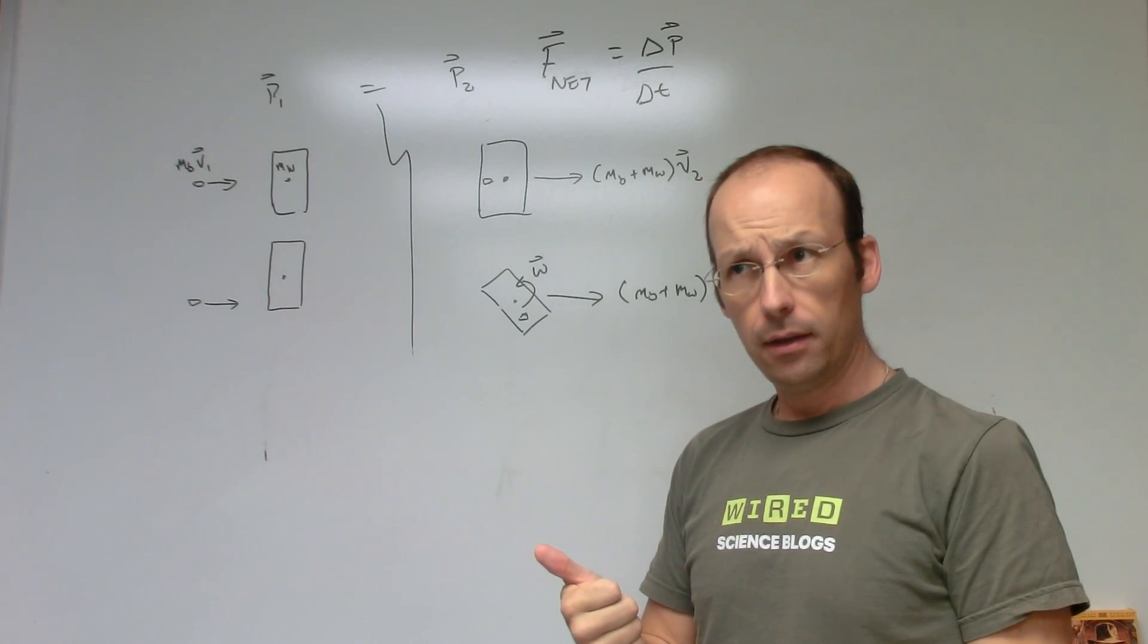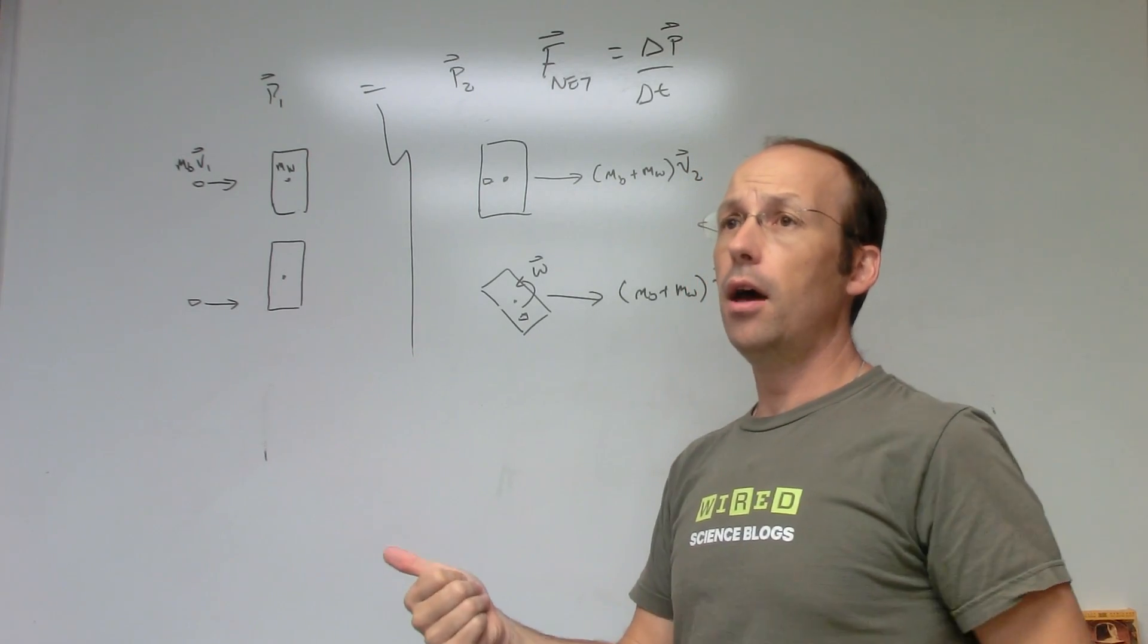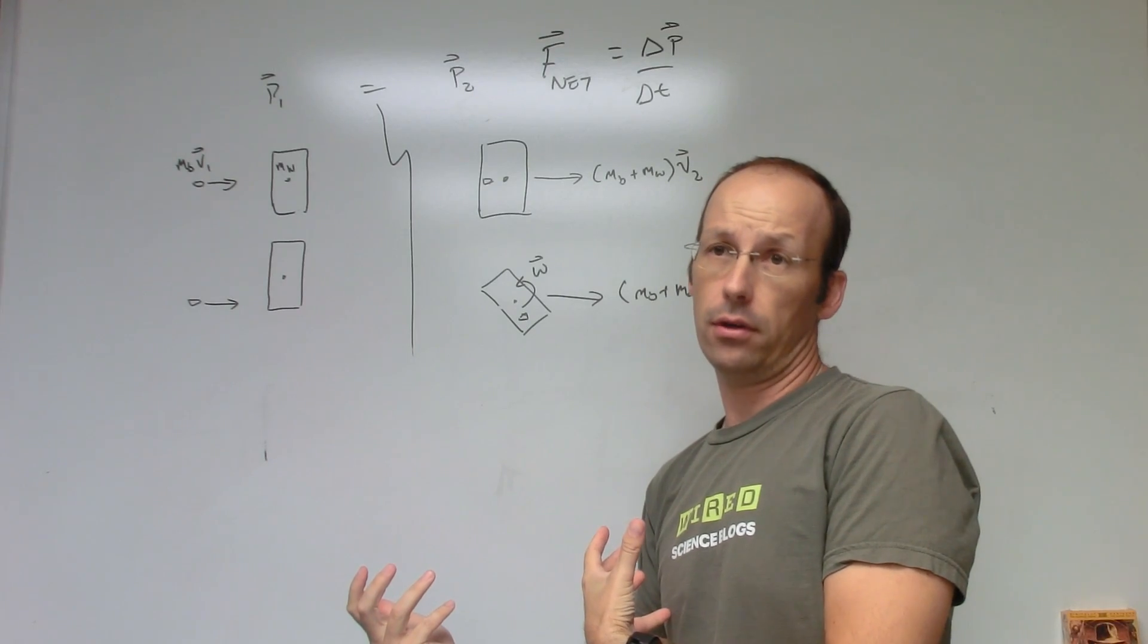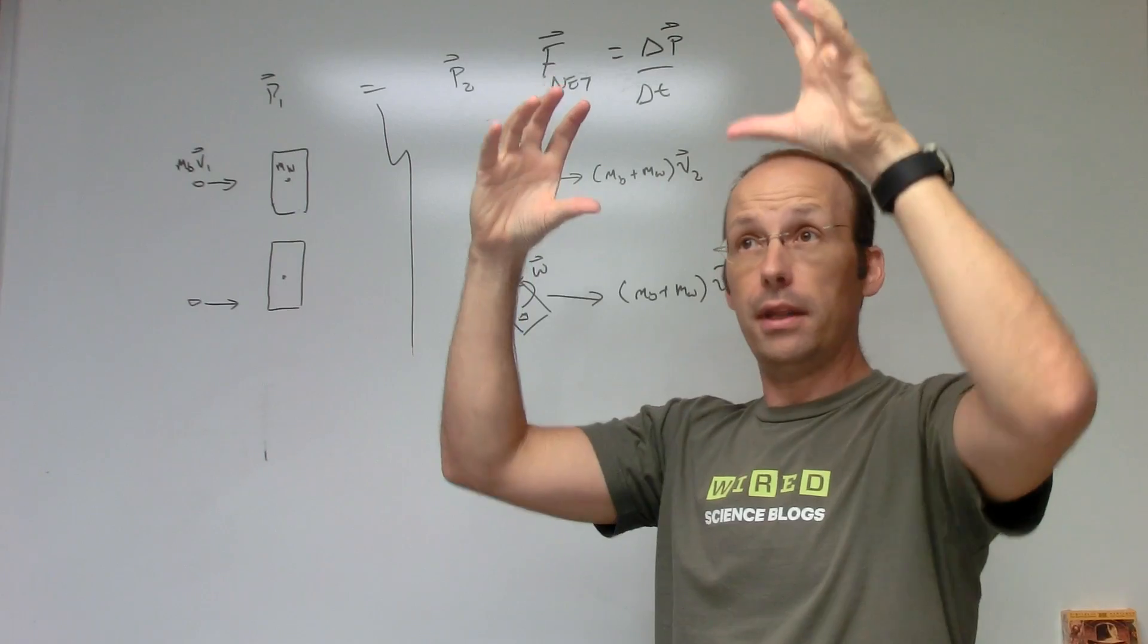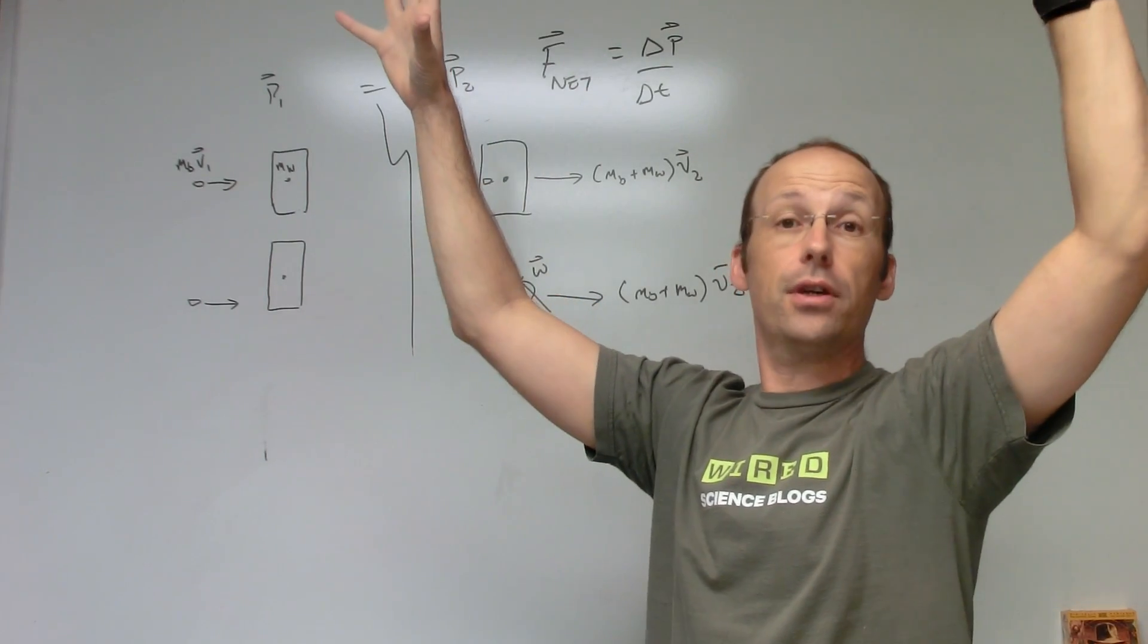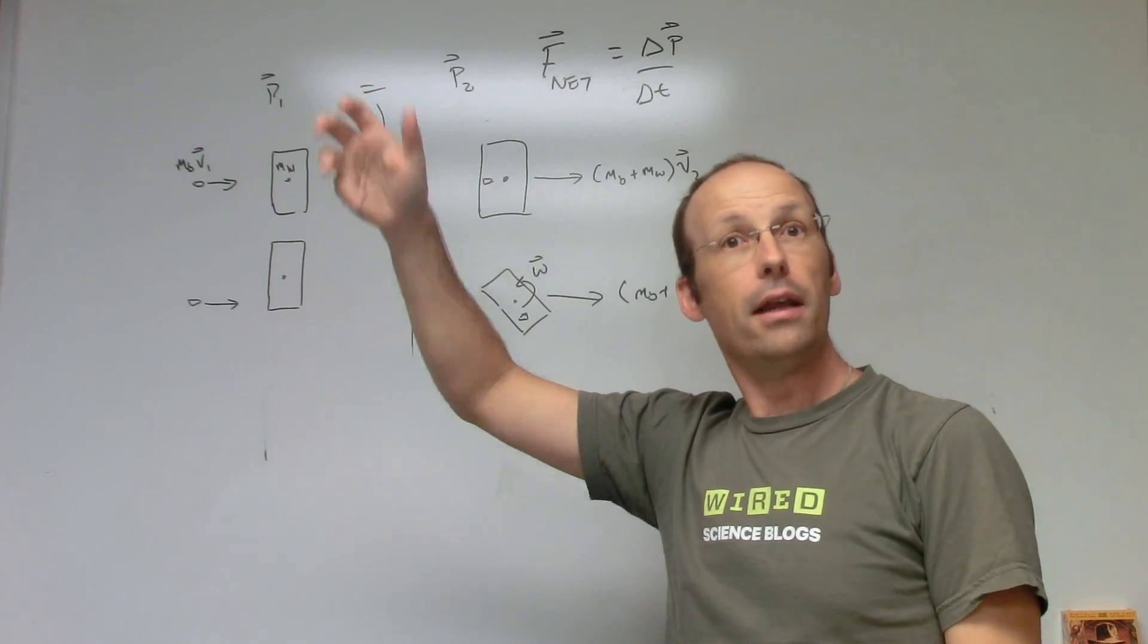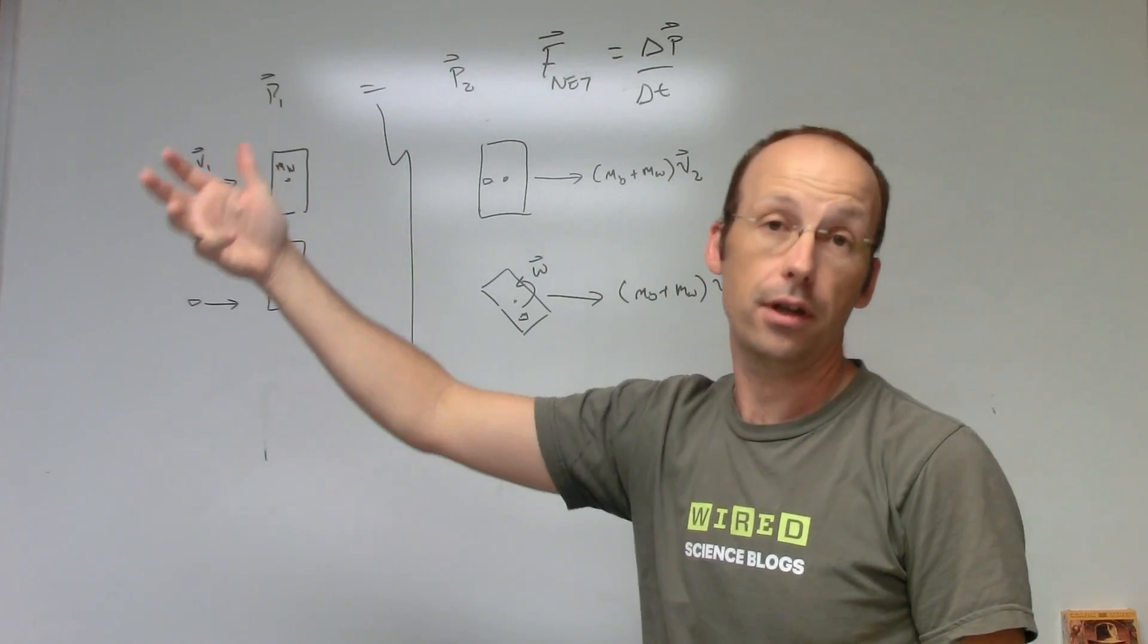Why do they go the same height, and why does one apparently have more energy than the other? Because if they go to the same height, they have the same potential energy. But the other one's spinning, so they have rotational energy also.